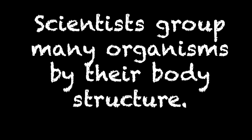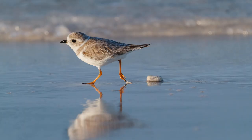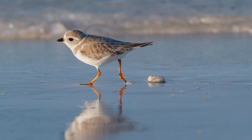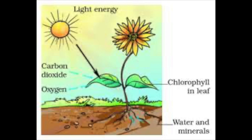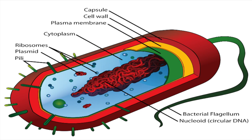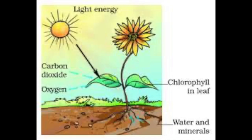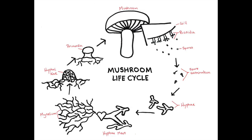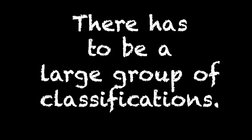Scientists group many organisms by body structure. For example, insects have six legs, birds have two legs and are covered with feathers. However, scientists don't usually group organisms only by their appearance. Scientists also classify organisms by their cell structure, how they get nutrients and energy, and how they reproduce.